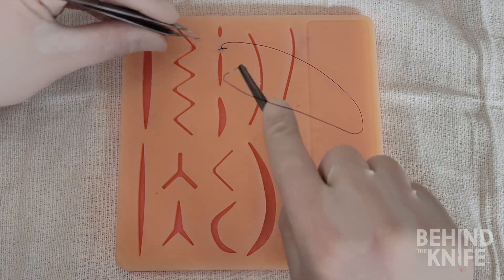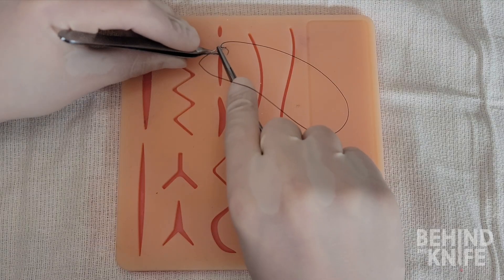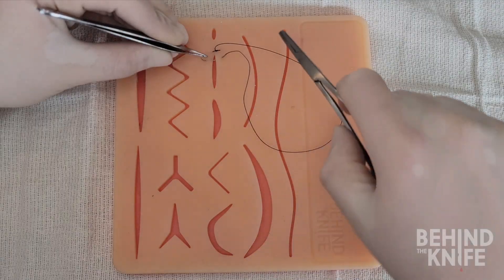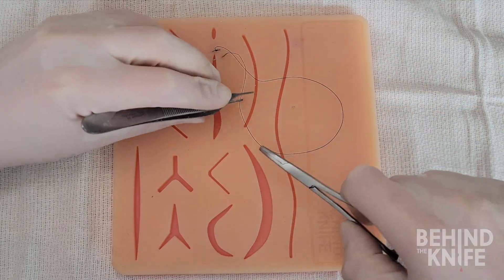You will throw your next stitch the same way. The difference here though is that when you come out with your needle on the other side you will bring your needle driver through the loop you've created prior to re-grasping the needle.